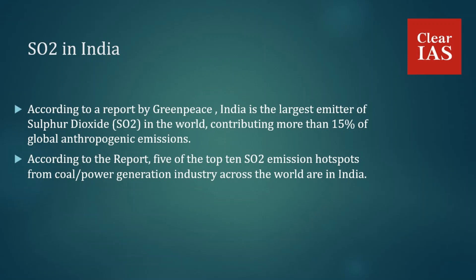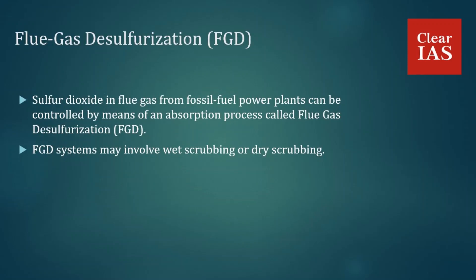Now we'll discuss a technique called Flue Gas Desulfurization. Flue Gas Desulfurization, or FGD, is an air pollution controlling mechanism. In India, the vast majority of coal-based power plants lack FGD technology. It works by controlling sulfur dioxide in flue gas from fossil fuel power plants through an absorption process called flue gas desulfurization.